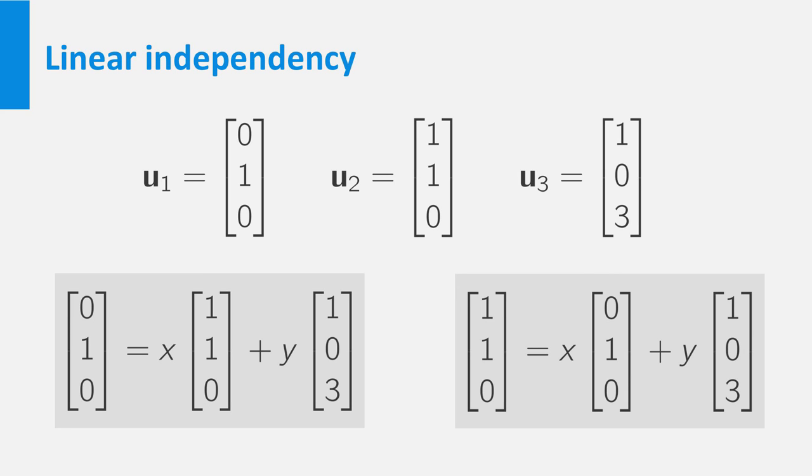So neither of these vectors is a linear combination of the others. This means that they are not linearly dependent. Such a set of vectors will be called linearly independent.